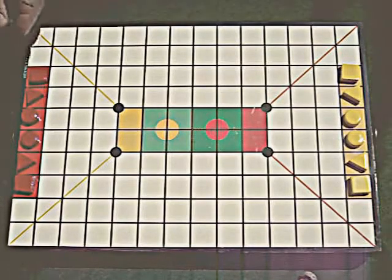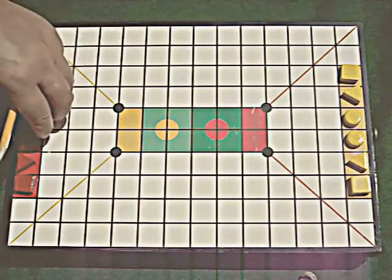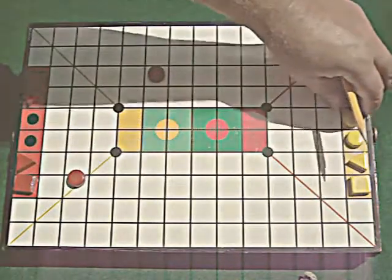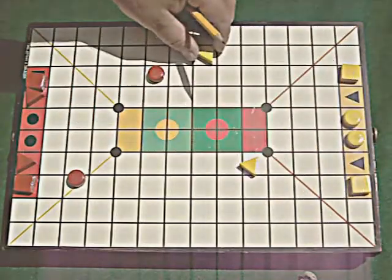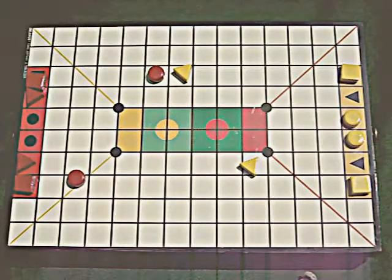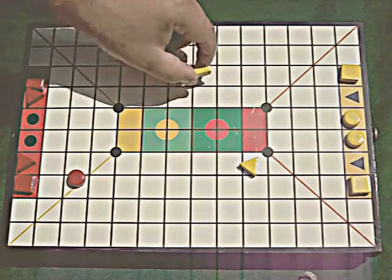What happens during the course of the game though is, let's just say for instance, we're out in the playing field, and let's just say it's triangle's turn. Okay, the red circle's turn and red decides to occupy the triangle space.